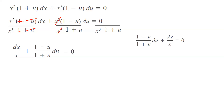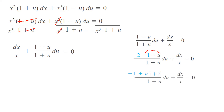Now we're going to do the long division, or simplify our fraction (1 minus u) divided by (1 plus u) to simplify this further. I'm going to write 1 as 2 minus 1. I'm taking negative (1 minus u) and factoring out the negative sign, so it ends up with negative (1 plus u) plus 2, divided by (1 plus u) du, plus dx over x equals 0. You can divide this into two separate fractions: negative (1 plus u) divided by (1 plus u) is negative 1, plus 2 over (1 plus u) du, plus dx over x equals 0.